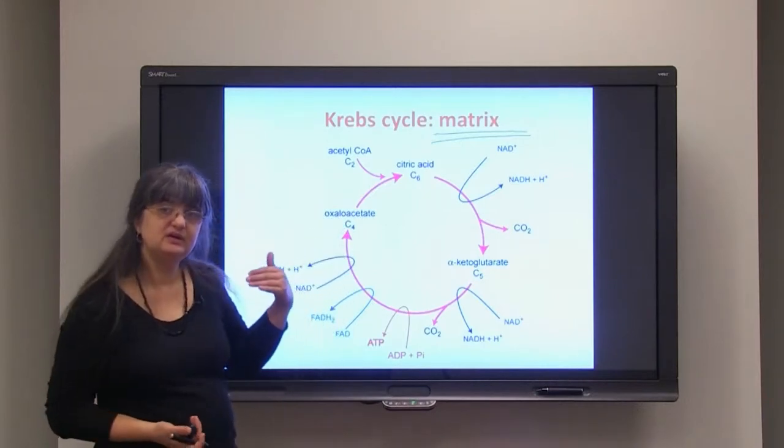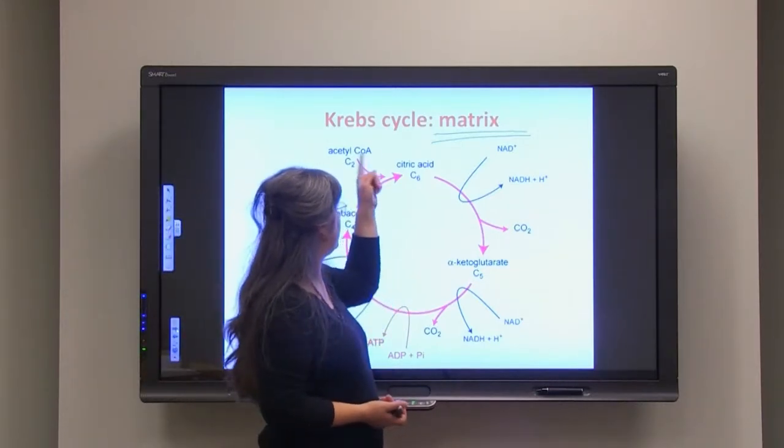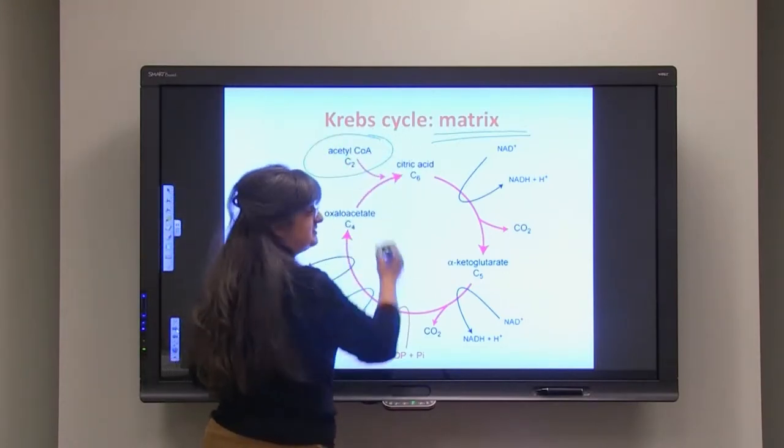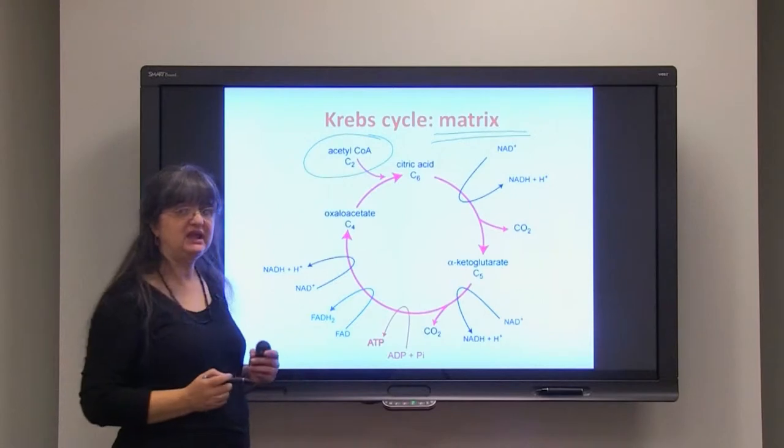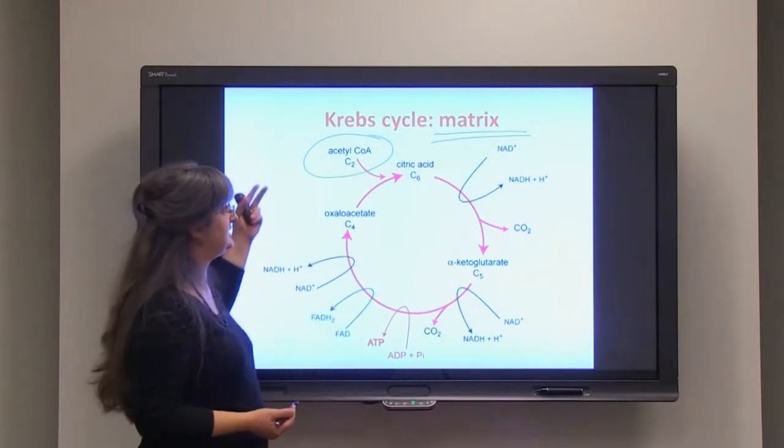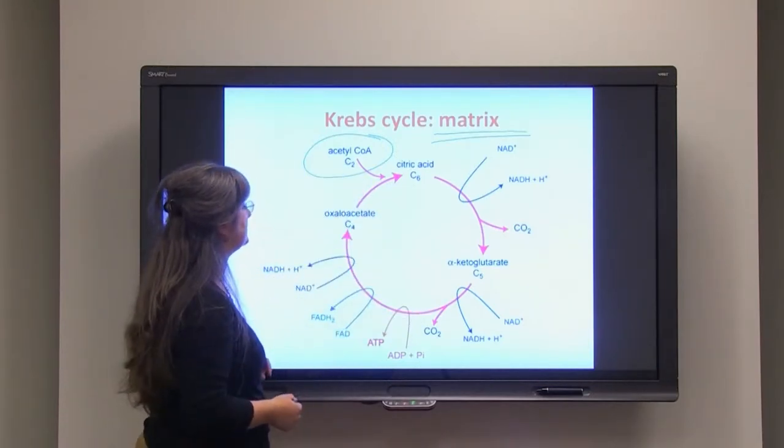Through the process of decarboxylation, we have acetyl coenzyme A entering the cycle for each pyruvate. So one molecule of glucose has two cycles of the citric acid cycle or Krebs cycle.